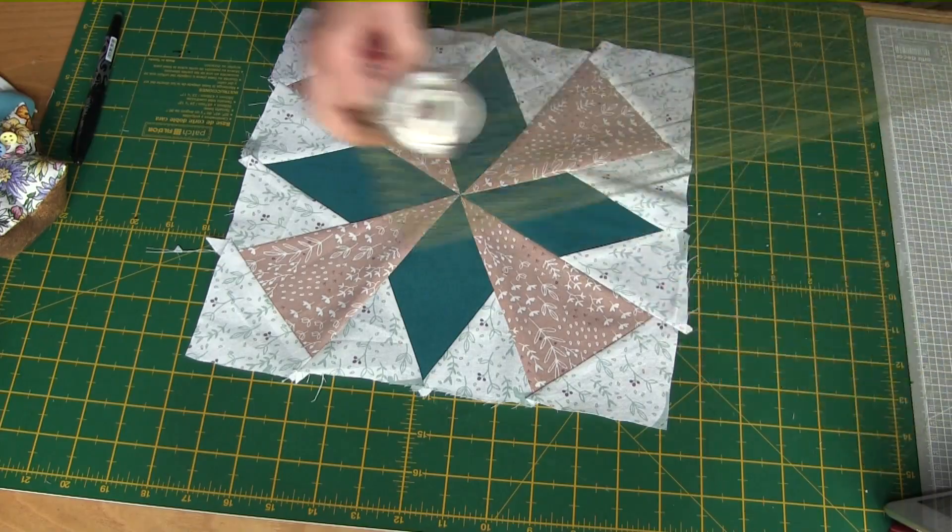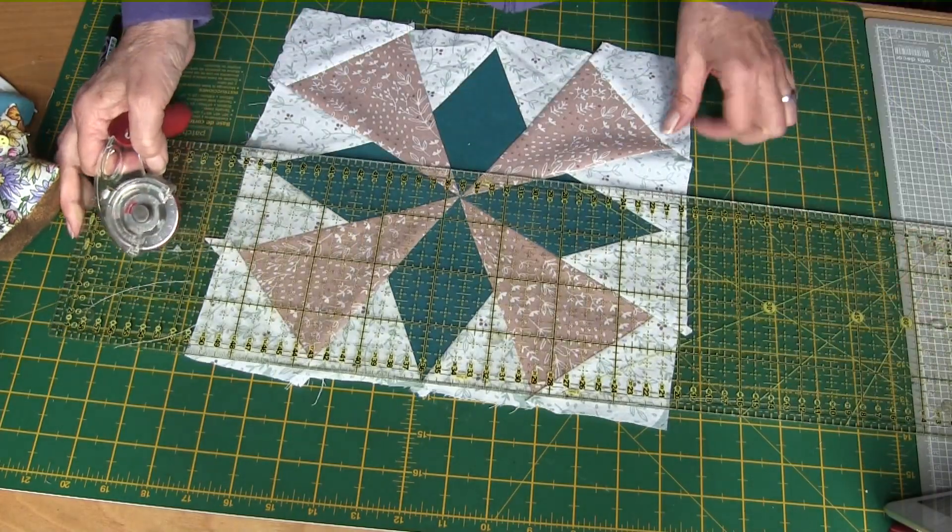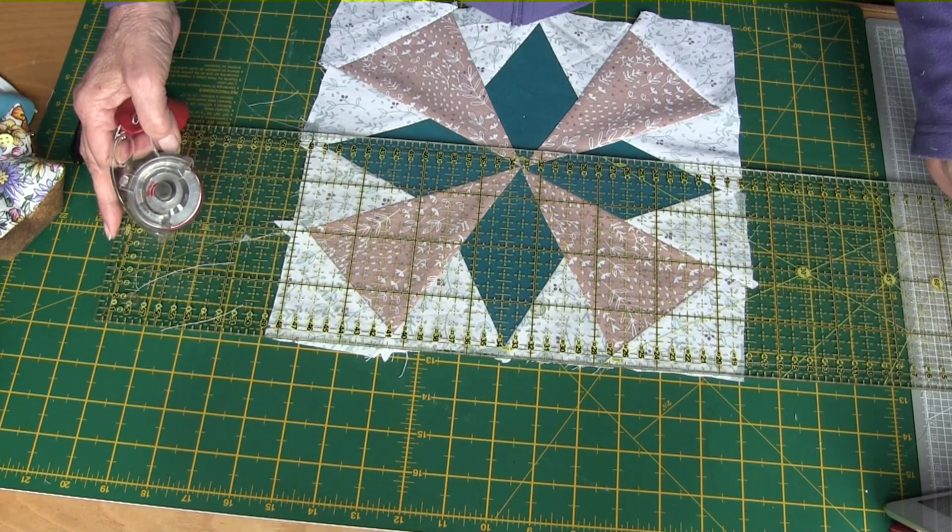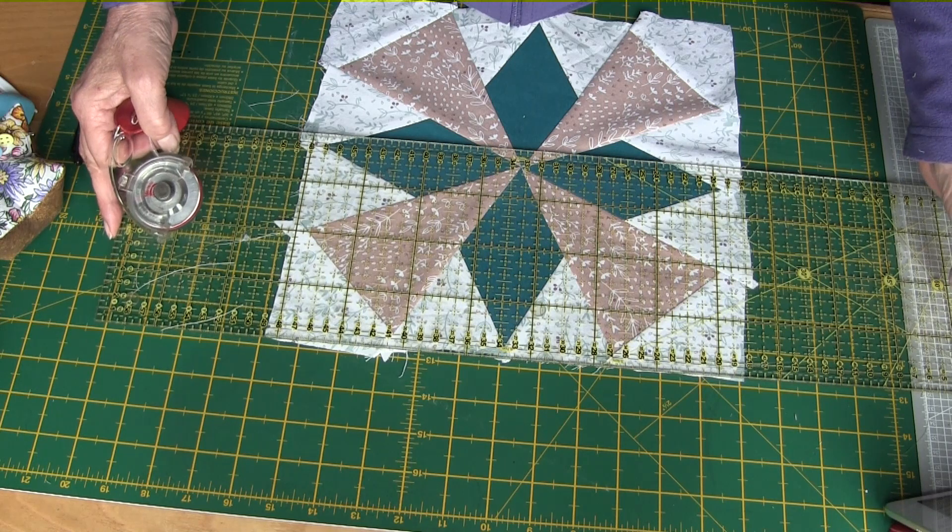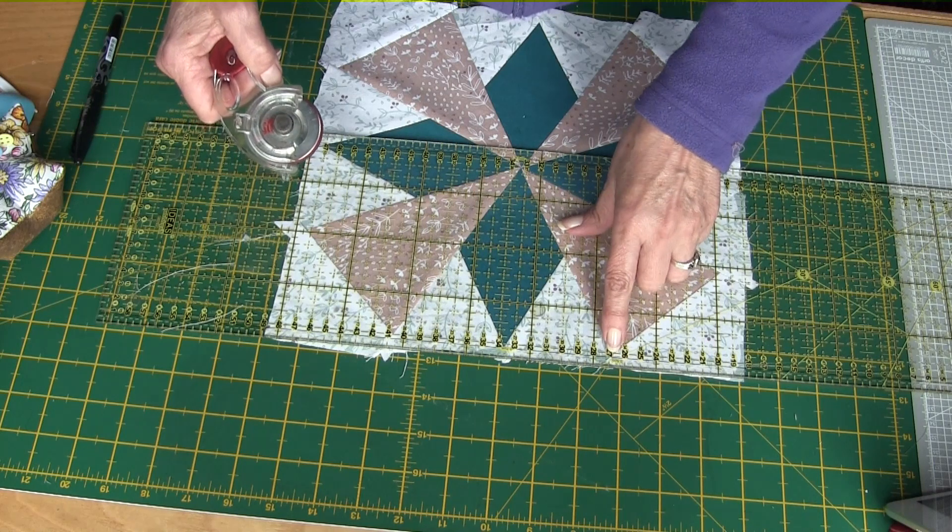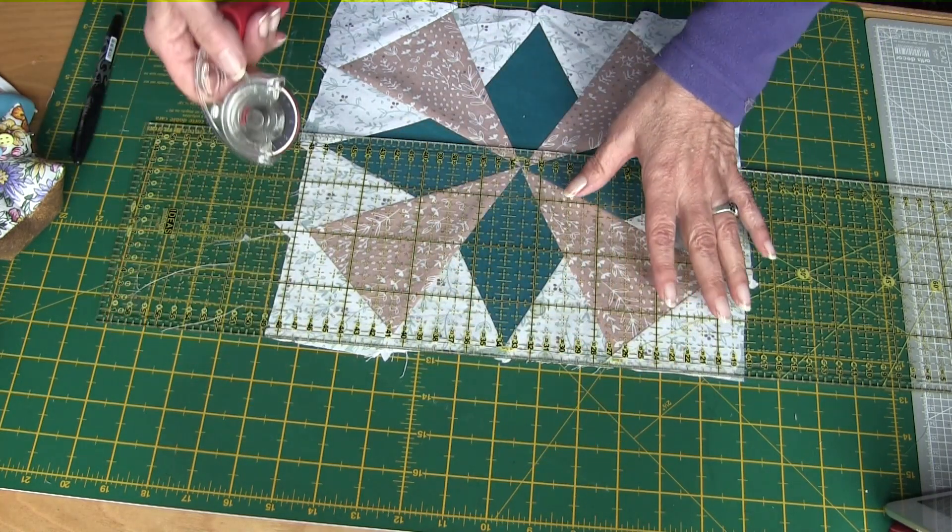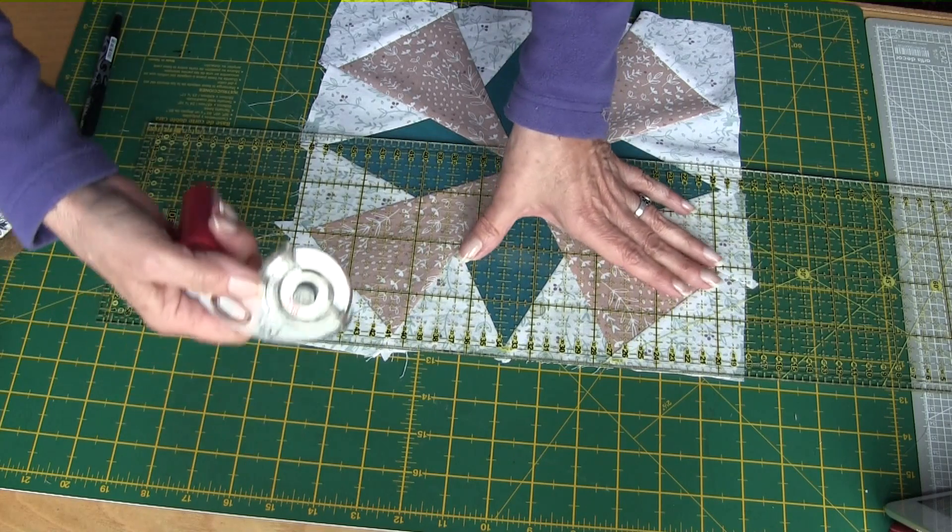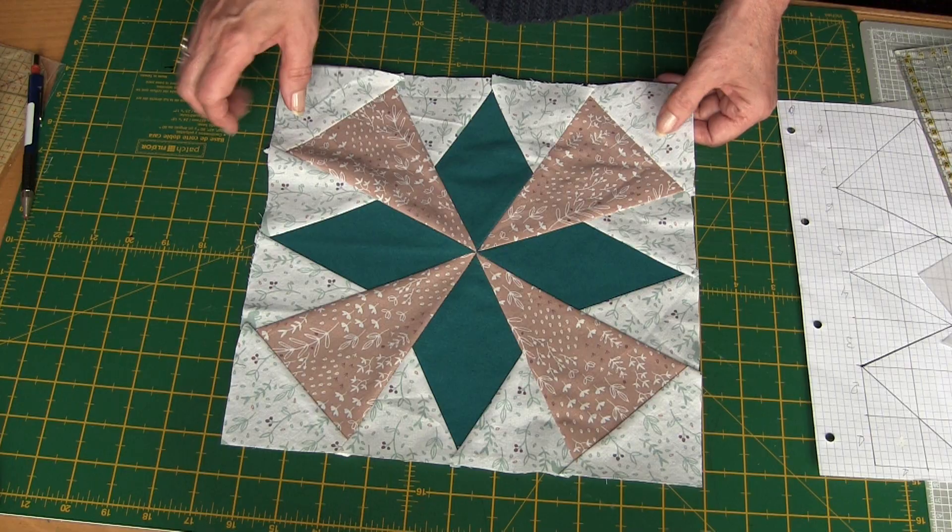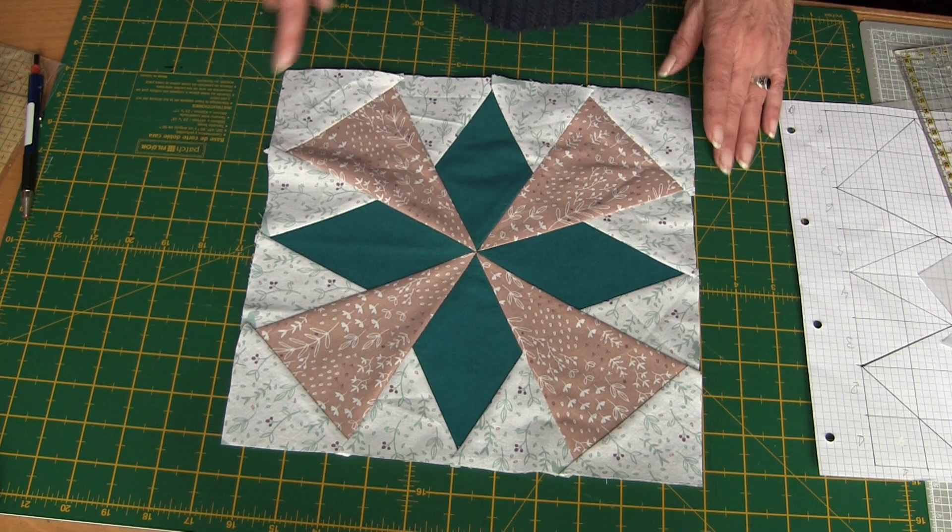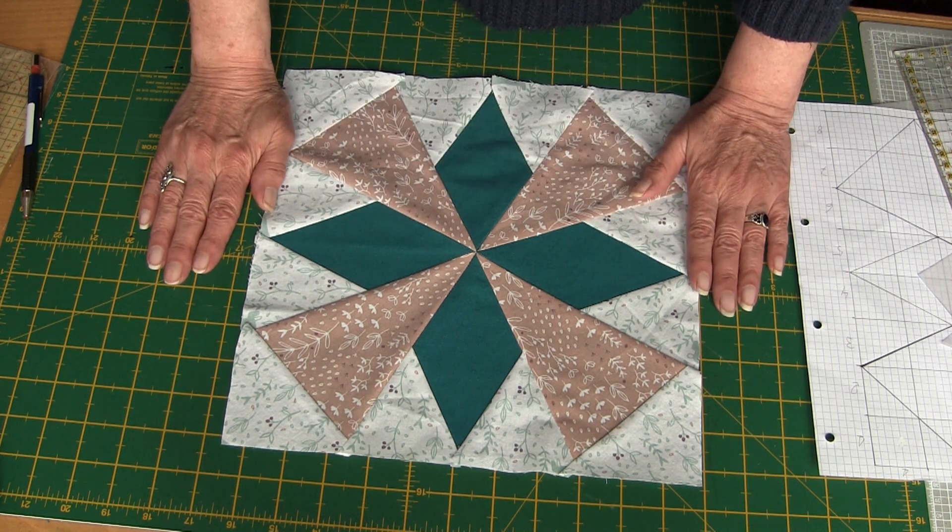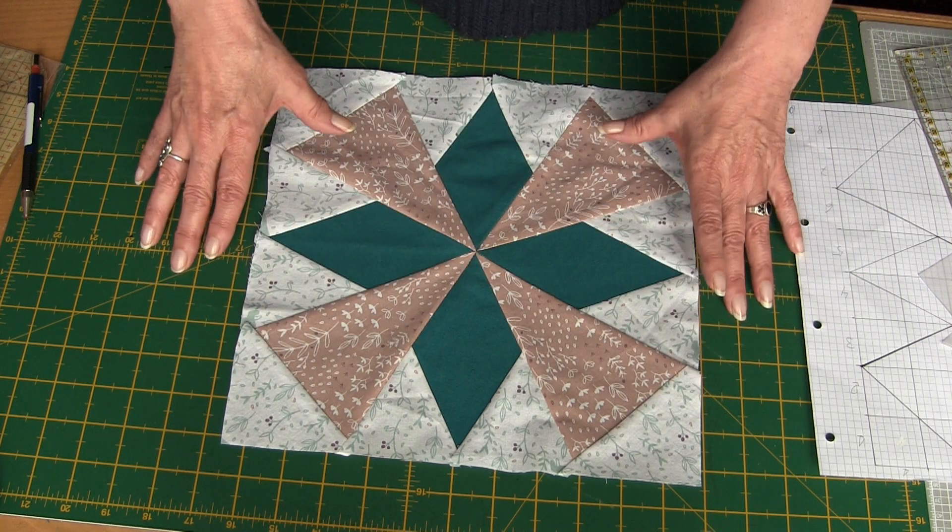Ahora solamente queda limpiar los bordes. Hay que fijarse que quede espacio suficiente para luego cuando unamos a los siguientes bloques, que no comernos las puntas. Una vez de tener limpios todos los lados, lo guardamos para cuando tengamos todos los bloques del año hechos.